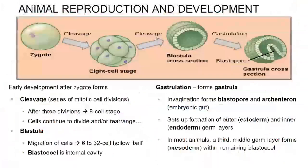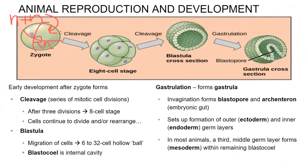Once sperm joins with the egg, we end up with a diploid zygote. Upon fertilization, it will almost instantaneously start dividing — it will divide and divide and divide, which is called cleavage. We end up with a circle of cells, usually around 8 to 10 cells. We still call this a zygote — it's at the 8-cell stage.